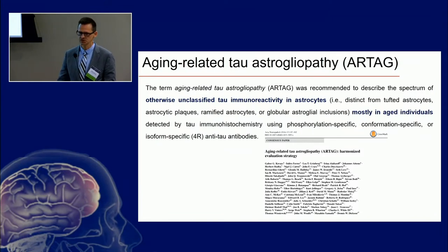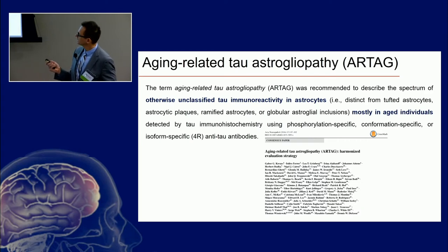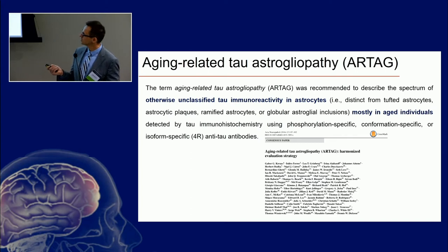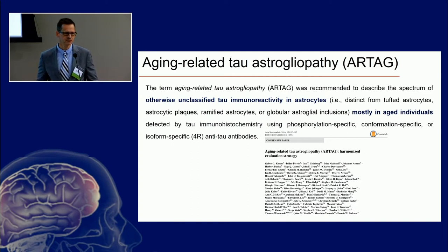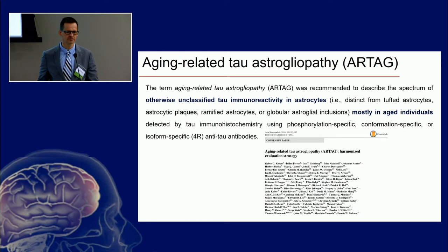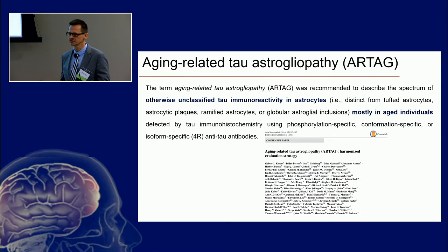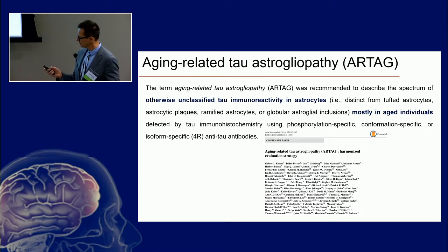Now let me define aging-related tau astrogliopathy, or ARTAG. This is a term recommended for astrocytic tau pathology which cannot be otherwise classified, because we see astrocytic tau pathology in many disorders like progressive supranuclear palsy or corticobasal degeneration. But there are astrocytes in the aging brain which do not fit into those morphological boxes, and we called for a consensus to define these.